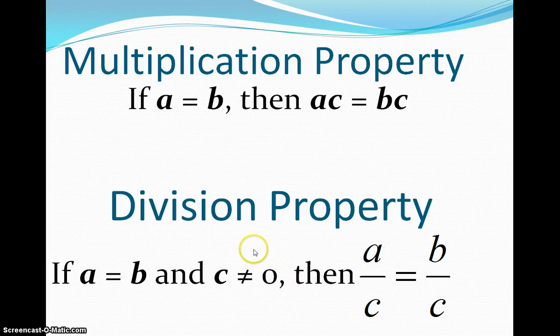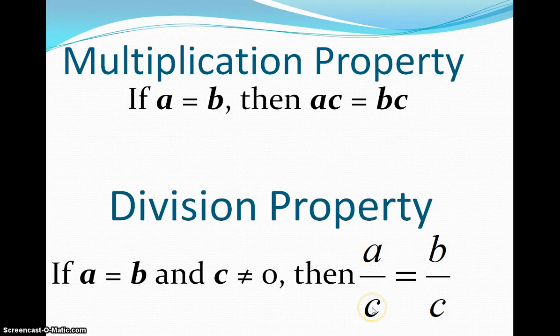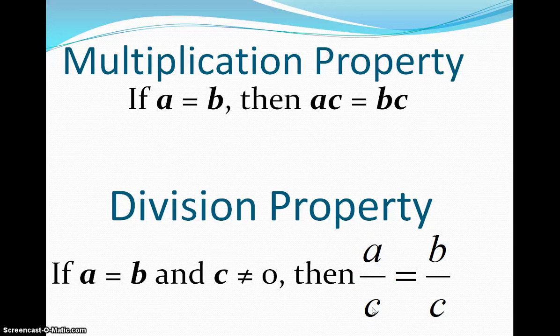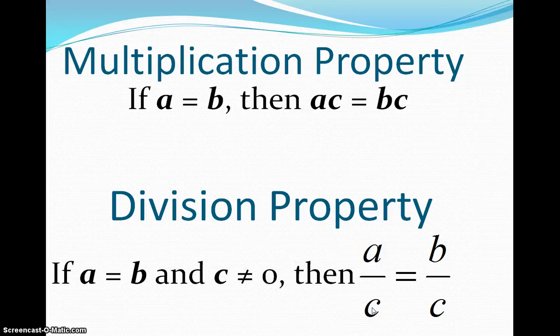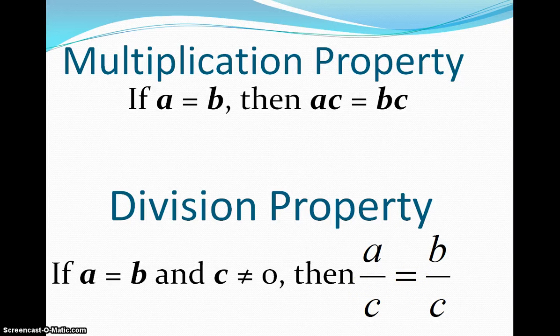And the reason for C can't equal zero is because if you think about it, if you have some number divided by zero, and if you try to plug that into your calculator, for example, like five divided by zero, you get an error, you get undefined. And we can't ever divide anything by zero, so hopefully you remember that from last year. If you don't, it's just a good refresher to know that you can never divide something by zero.